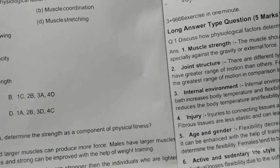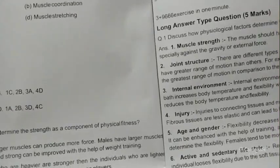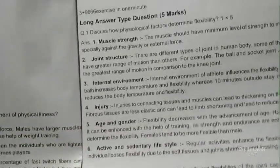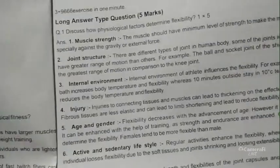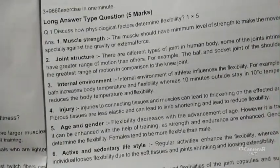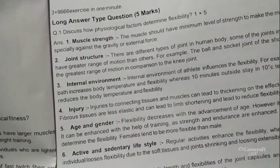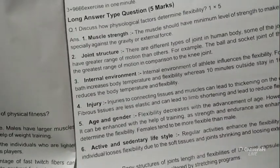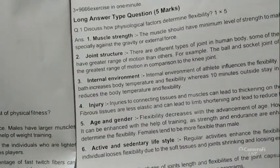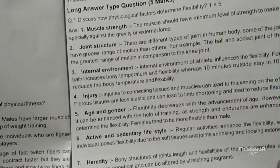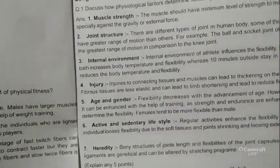Long question: discuss how physiological factors determine flexibility. The seven factors are: number one, muscle strength; number two, joint structure; number three, internal environment; number four, injury; number five, age and gender; number six, active and sedentary lifestyle; number seven, heredity.